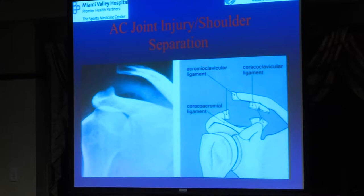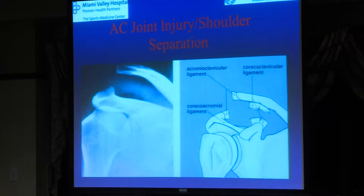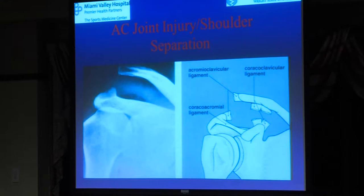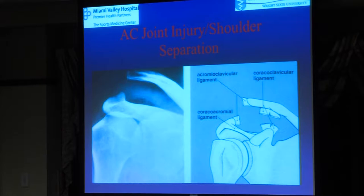In a high-grade AC separation, the clavicle pops up and can be tenting the skin — it can look pretty dramatic. When you have something this severe, you tear both your acromioclavicular ligaments as well as your coracoclavicular ligaments. That allows the clavicle and scapula to separate. What really happens is the scapula, shoulder, and weight of the arm go inferiorly — the clavicle doesn't necessarily spring superiorly; it's gravity and the weight pulling it down. But they separate, and the clavicle edge is what looks prominent.